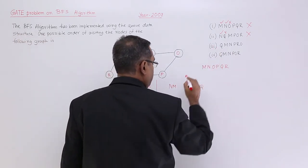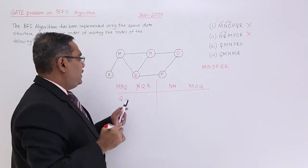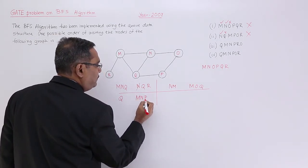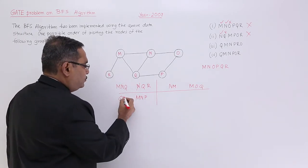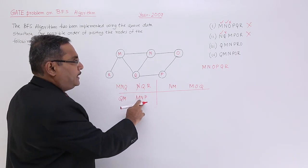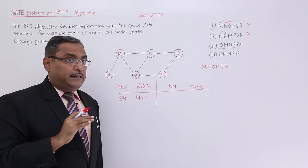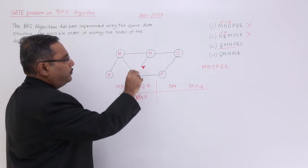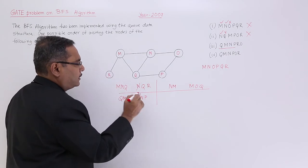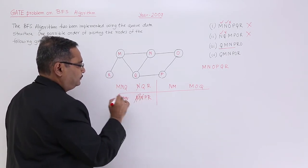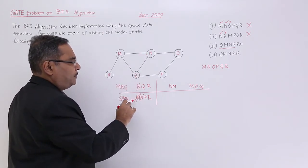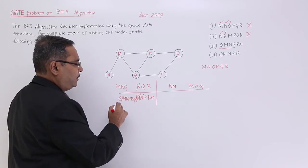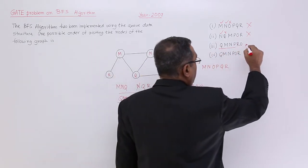Next, I am going for option 3, starting with Q. Q has adjacent nodes M, N, and P, which are inserted in the queue. M will come out first — Q and M are matching. M is deleted from the queue, and its unvisited adjacent node R is inserted. Then N comes out; its unvisited adjacent node O is inserted. Then P comes out, then R, then O. So the order is Q, M, N, P, R, O — that is the answer.